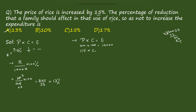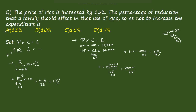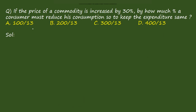Here is one more method. Price × consumption = expenditure. Let the initial expenditure be 10,000. The new price is 115 (after 15% increase), so new consumption = 10,000 / 115, which equals 2000/23. The decrease in consumption = 100 − 2000/23 = 300/23, which again equals approximately 13 percent. So the answer is option A only, but this method involves more calculations.